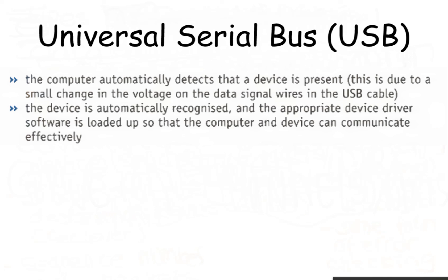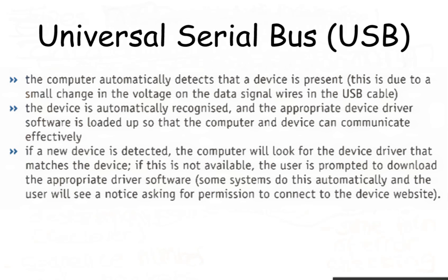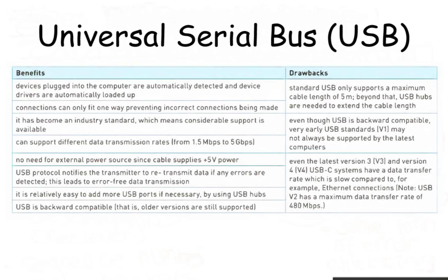The device is automatically recognized and the appropriate device driver software is loaded up so that the computer and device can communicate effectively. If a new device is detected, the computer looks for the device driver that matches the device. If this is not available, the user is prompted to download the appropriate driver software. Some systems do this automatically and the user will see a notice asking for permission to connect to the device website. We will now consider the benefits and drawbacks of using the USB system, as seen in this table.